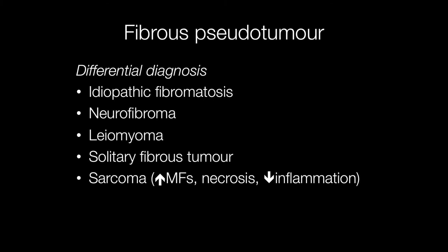The differential diagnosis includes idiopathic fibromatosis, neurofibroma, gliomyoma, and solitary fibrous tumour. The important differential diagnosis is sarcoma. In sarcoma, one would expect to see increased mitotic activity, areas of necrosis, and a lack of inflammation. Whereas in fibrous pseudotumour, there are infrequent mitotic figures, no necrosis, and inflammatory cells will be present.